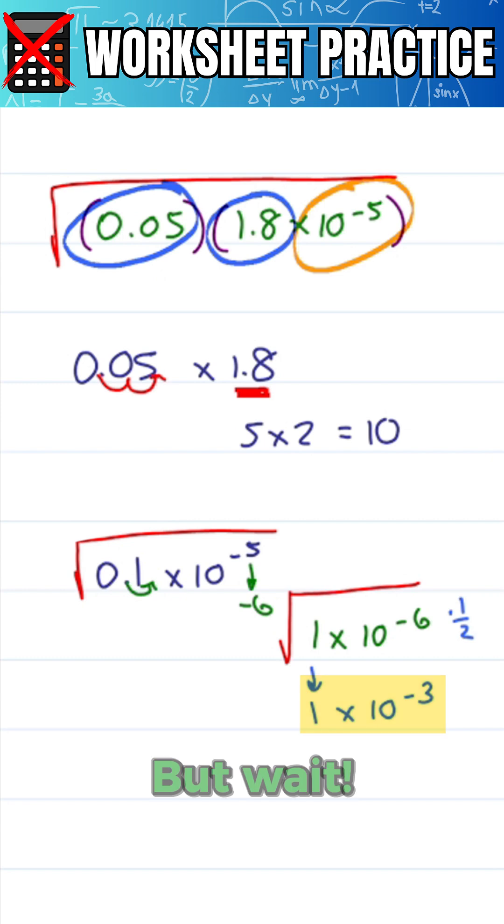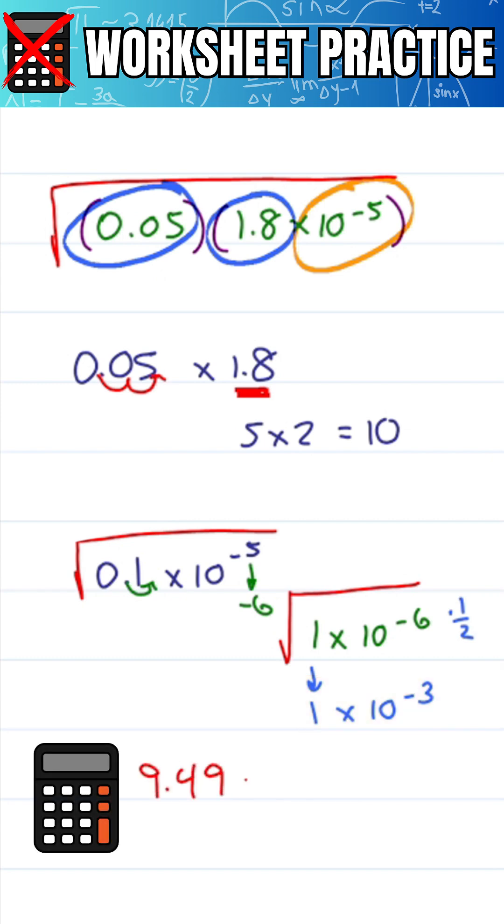But wait, calculator says 9.49 times 10 to the minus 4. That doesn't look like 1 times 10 to the minus 3 or does it? I can round 9.49 to give me 10 times 10 to the minus 4. That's improper scientific notation so I move the decimal left for a 1, raise this to the minus 3 to make it bigger and that gives me 1 times 10 to the minus 3 which is what I got.